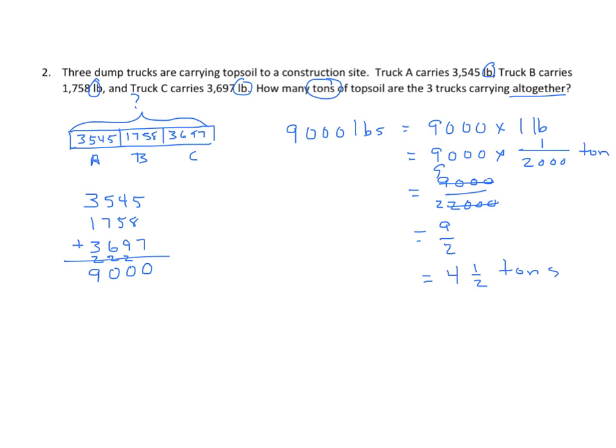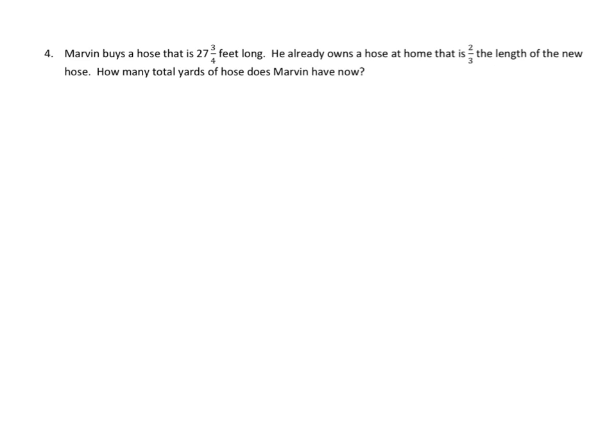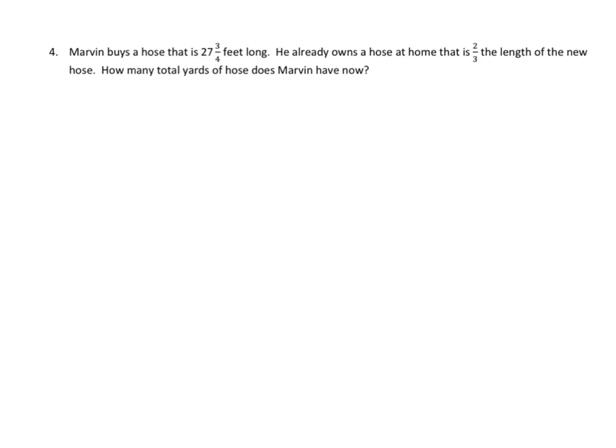Moving along. Okay, this one's a fairly complex problem. It's got a lot in common with the last one on the homework so I'm going to do this one. Let's read it. Marvin buys a hose that is 27 3 fourths feet long. He already owns a hose at home that is 2 thirds the length of the new hose. How many total yards of hose does Marvin have now? Let's draw a little diagram, always a good idea. So I have my original hose, or the one we buy rather, and we know that's 27 3 fourths feet. We're going to partition this into three equal parts. We're going to represent the second hose which is 2 thirds the length. We want to find the total, and after we find the total we need to convert feet to yards.